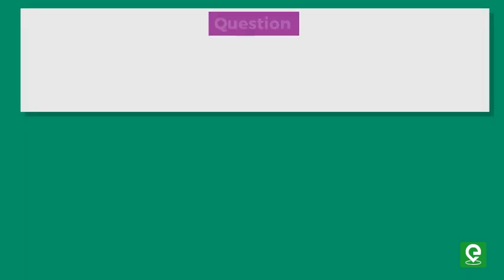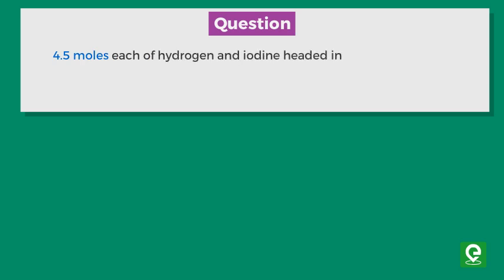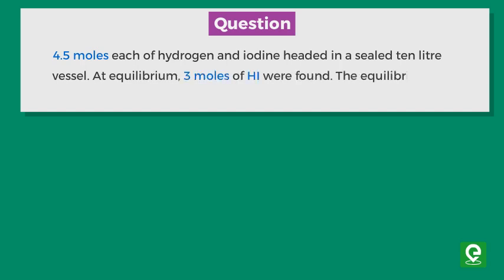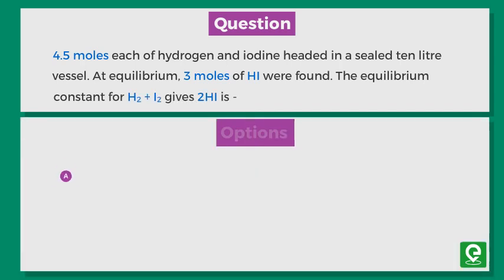Question: 4.5 moles each of hydrogen and iodine are heated in a sealed 10 liter vessel. At equilibrium, 3 moles of HI were found. Find the equilibrium constant for H2 plus I2 gives 2HI.